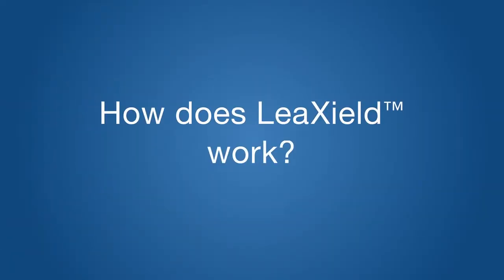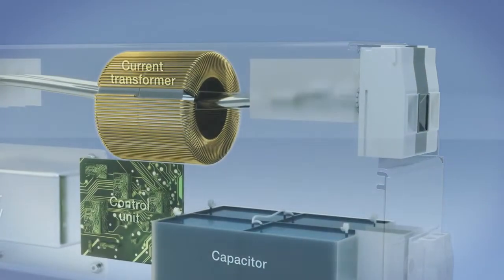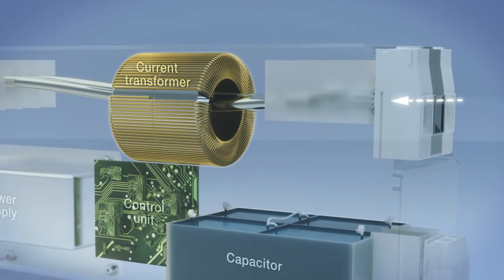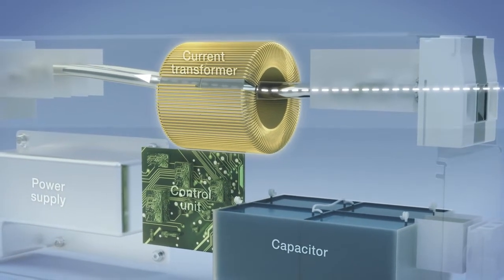How does LeakShield work? First, the current transformer measures the incoming residual current from the load side.